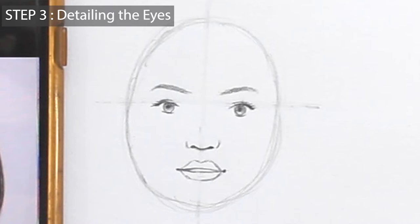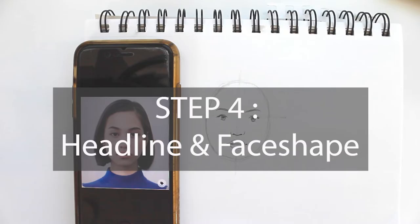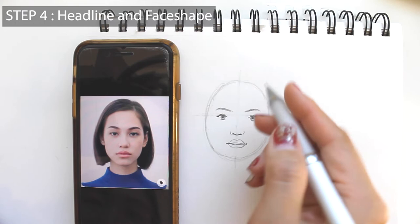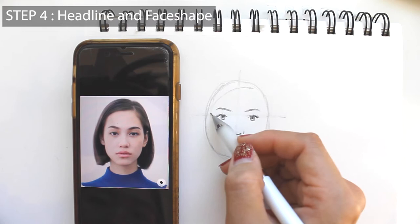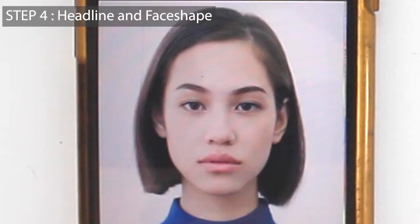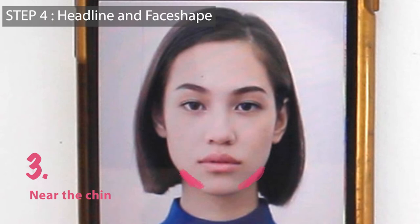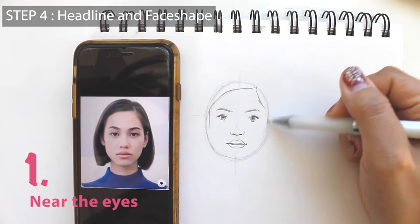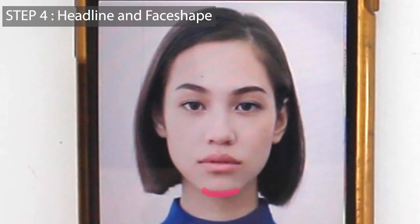Step 4: Hairline and face shape. When drawing the shape of the face, I like to imagine this is like sculpting — I have a big chunk of oval and now I'm going to cut and trim it into the shape I want. Observe the distance between the eyes and the hairline. Draw the hairline at the top, then the temple areas. I divide the sides of the face into three parts: first near the eyes, second near the cheeks, third the sides next to the chin. Then draw the chin by connecting the face with the curve at the bottom.